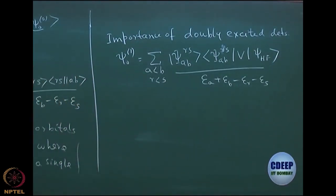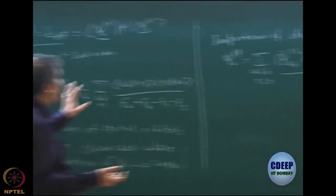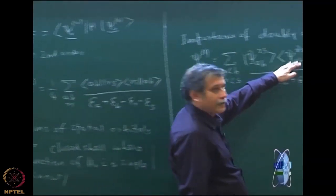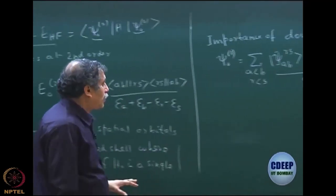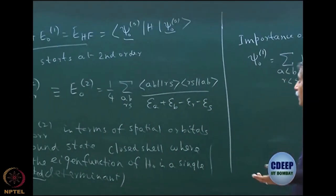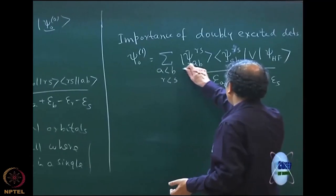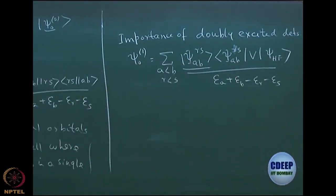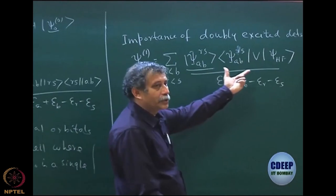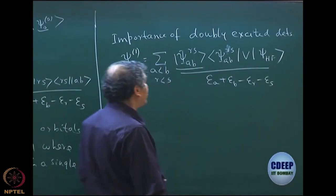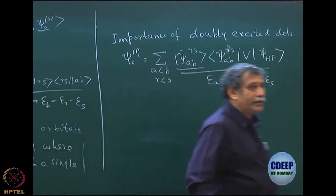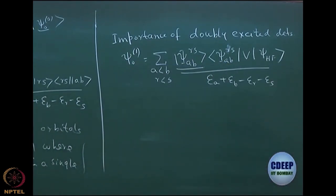We wrote ψ⁰₁ as a combination of doubly excited determinants ψ^{ab}_{rs}, with linear combination coefficients equal to the matrix element ⟨ab‖rs⟩ divided by (εₐ + ε_b − ε_r − ε_s) — essentially the difference of occupied and virtual energies. E⁰₂ was ⟨ψ_HF|V|ψ⁰₁⟩. The first important determinant contributing at the lowest perturbation order is actually the doubly excited determinant, because Brillouin's theorem eliminates singly excited ones.